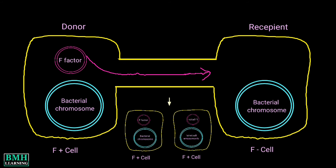A pilus on the F positive cell interacts with the recipient cell, allowing formation of a mating junction. The DNA is nicked on one strand, unwound, and transferred to the recipient.